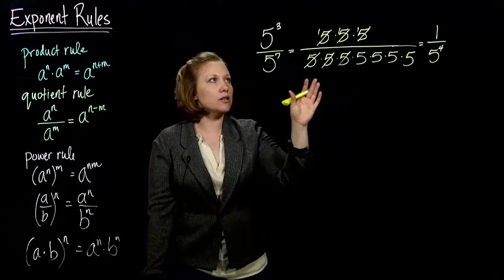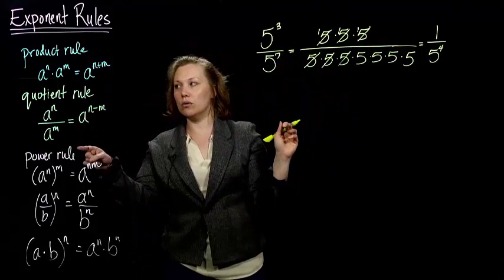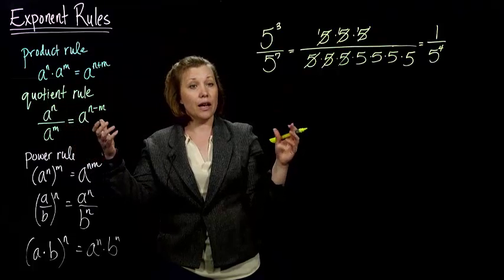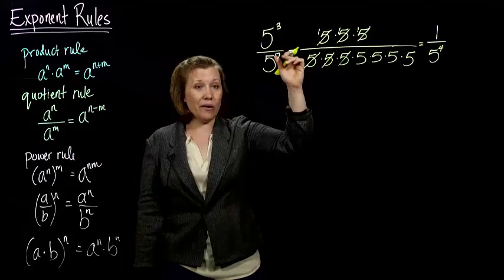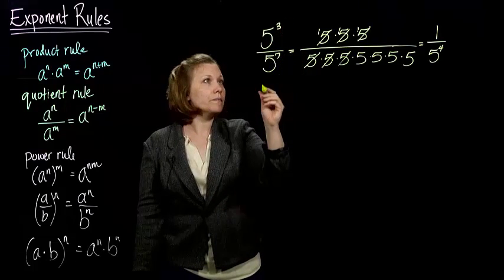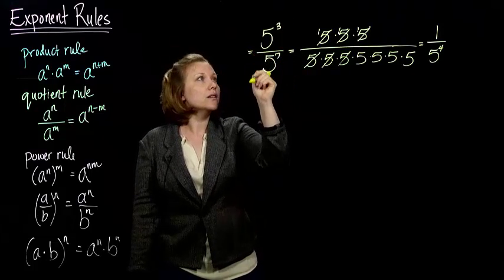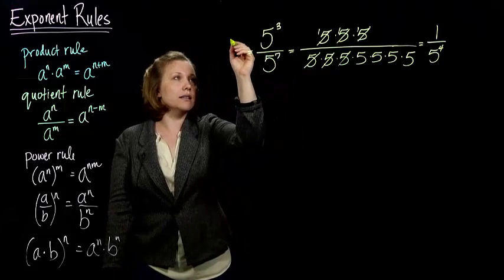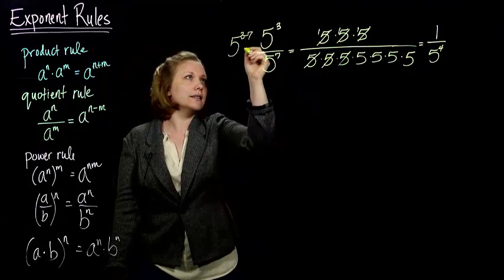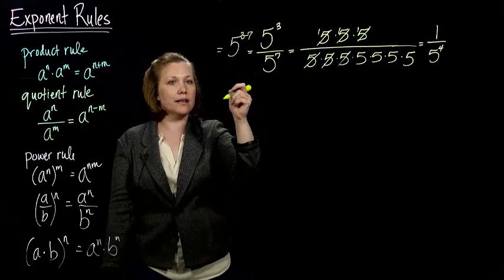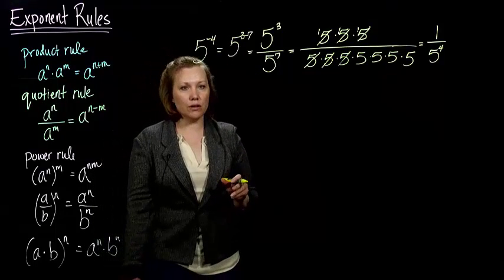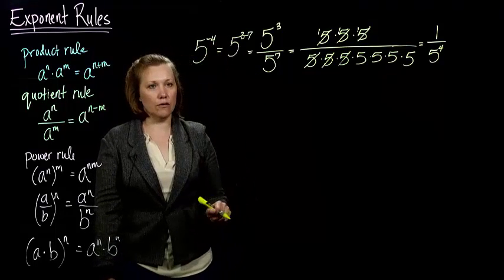Let's go back to using our quotient rule. So our quotient rule told us to take the top number and subtract the bottom number. It still works even though our top one is smaller than our bottom one. So if I do that, I get 5 to the 3 minus 7. Well, 5 to the 3 minus 7 gives me negative 4. So I have 5 to the negative 4.